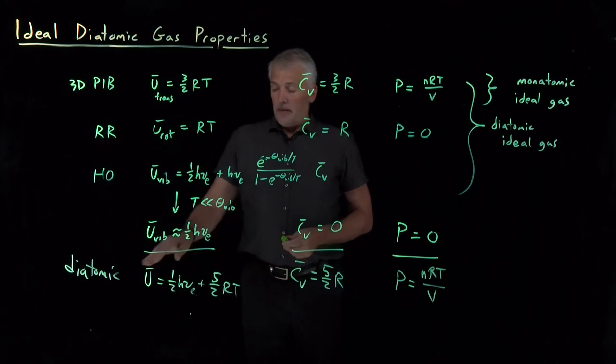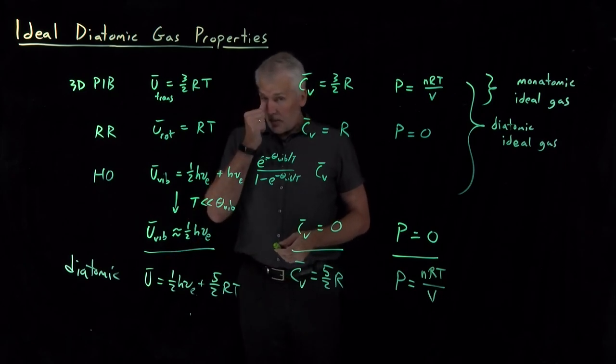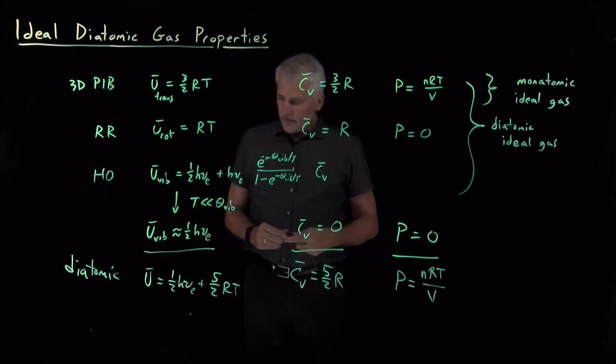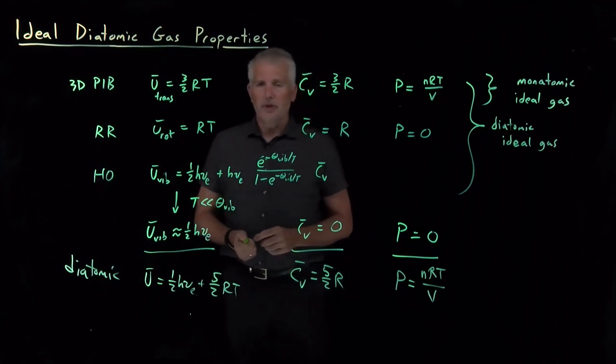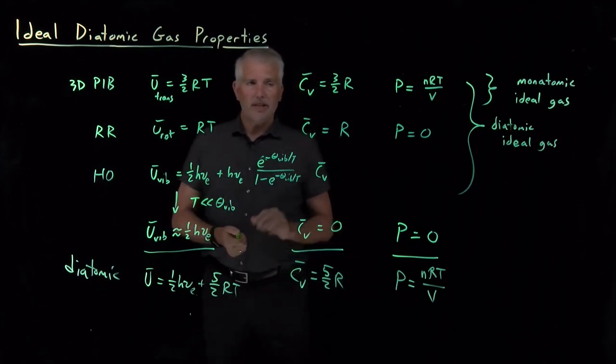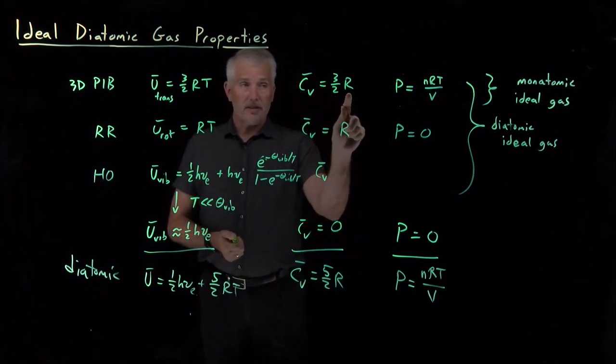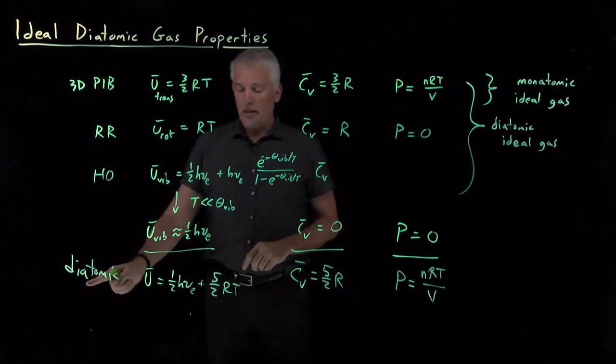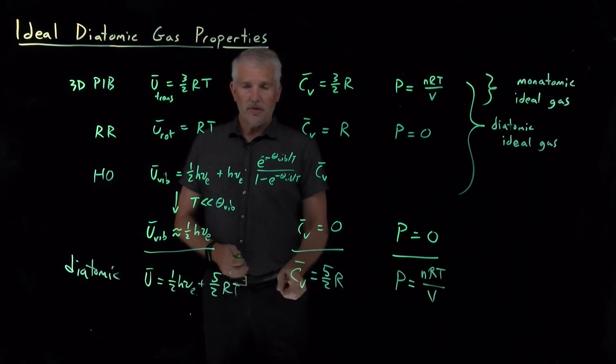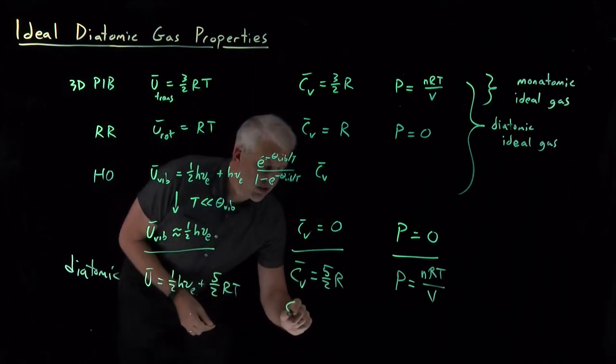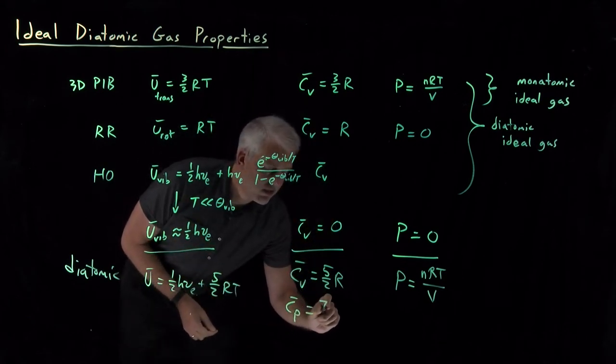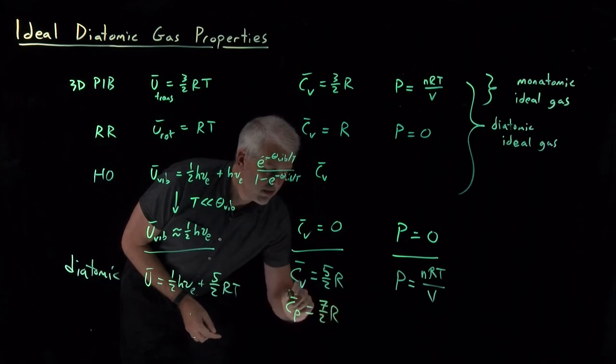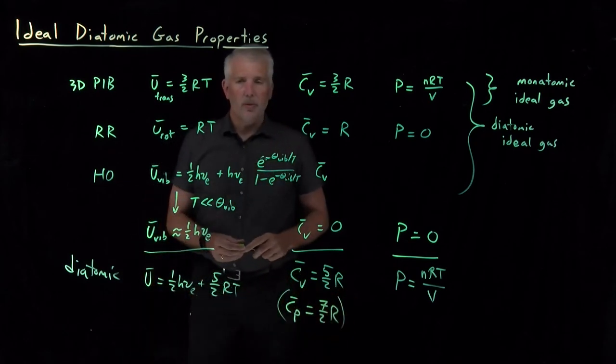So this has begun to show us a couple of different things. First of all, you may remember from general chemistry, you may have learned that the heat capacity of a monatomic ideal gas is three halves R for CV and five halves R for CP. For a diatomic gas, it's five halves R for CV and seven halves R for CP. And now we see why that's true.